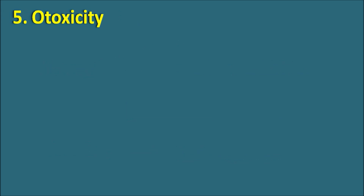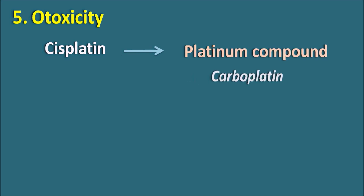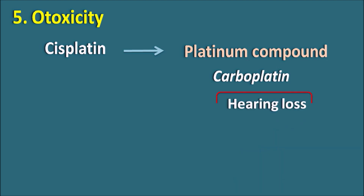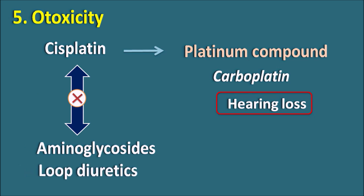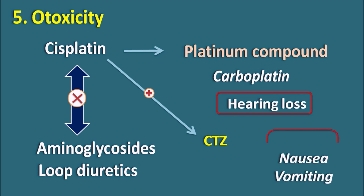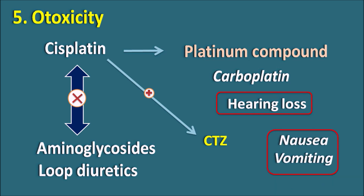Fifth is ototoxicity. Cisplatin, a platinum compound, can produce ototoxicity, causing loss of hearing and deafness. A related drug, carboplatin, carries less risk of ototoxicity compared to cisplatin. Because of this side effect, cisplatin should not be combined with other drugs like aminoglycosides or loop diuretics, which also produce ototoxicity. Also recall that cisplatin can directly stimulate the CTZ producing nausea and vomiting, which can be prevented by ondansetron, a 5-HT3 antagonist.